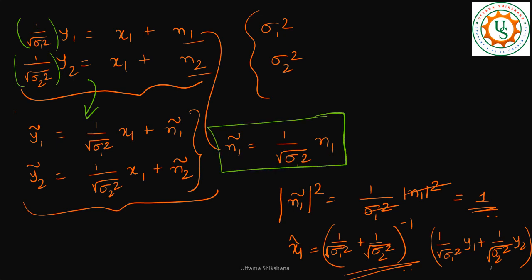Now the thing is that if I consider any one quantity, n1 tilde, which is actually equal to 1 by square root of sigma 1 square times n1, if I try to take the variance of it I will get one. Similarly for n2 tilde the variance will be one. Can you see both of them have the same variance? So now we have converted the noise into white noise. In this particular equation now we can use the same intuitive solution to actually get the x1.